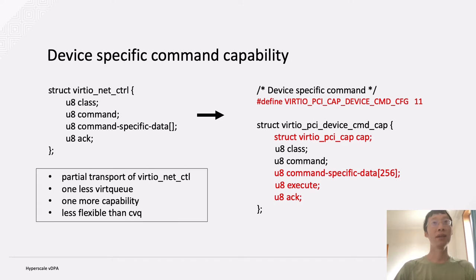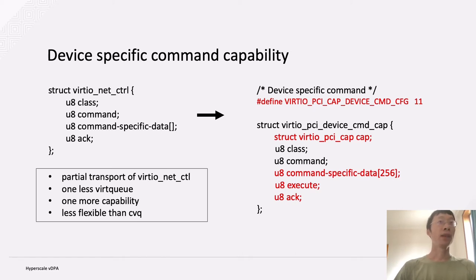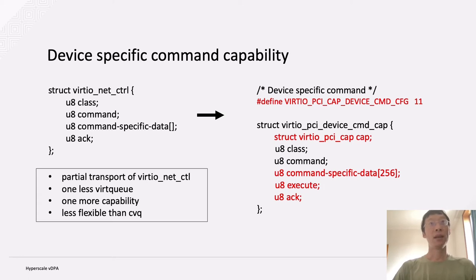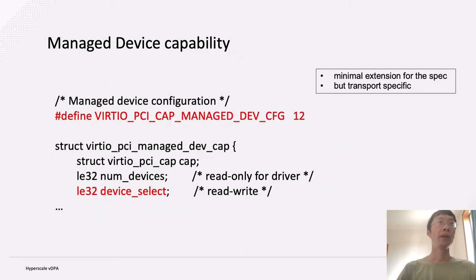With hardware implementing this capability, there is no need to present a hardware control queue. It is just a partial transport because for the control queue we can have variable-length command-specific data which cannot be done in the PCIe BAR. This means less flexibility, but typically 256 bytes of command-specific data should be sufficient. It also means we save one VDPA queue.